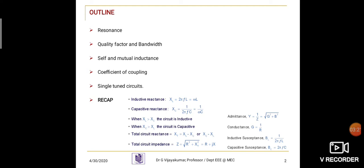Here G represents the inverse of the resistance value, and it is called conductance. Inductive susceptance BL is equal to 1 divided by 2πFL. And capacitive susceptance BC is equal to 2πFC. These are all the recap from the previous third unit.